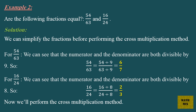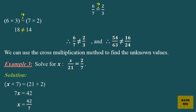For 16 over 24, the numerator and denominator are both divisible by 8. So, 16 over 24 equals 16 divided by 8, over 24 divided by 8, which equals 2 over 3. Now we'll perform the cross multiplication method. Does 6 over 7 equal 2 over 3? Does 6 times 3 equal 7 times 2? 18 doesn't equal 14. Therefore, 6 over 7 doesn't equal 2 over 3.